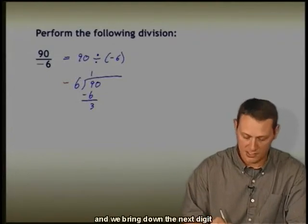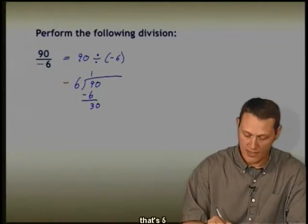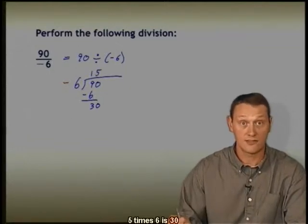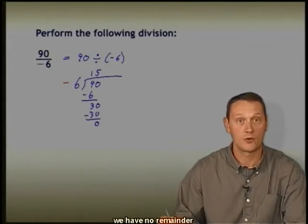Then we bring down the next digit, which is 0. Then how many times does 6 go into 30? That's 5. 5 times 6 is 30. That looks good. We have no remainder.